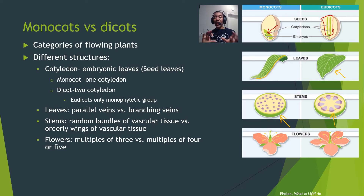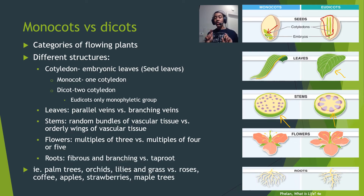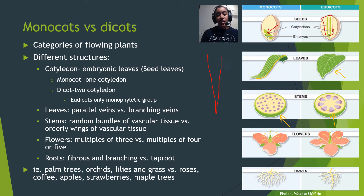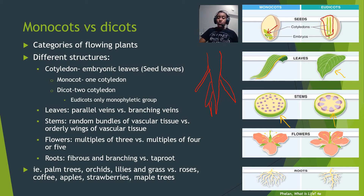In monocots, flowers tend to have multiples of three — three petals, three or six stamens. In dicots, they're generally multiples of four or five. Looking at roots, monocots generally have fibrous roots that branch out from the base of the stem. Dicots have a tap root — a main central root that digs deeper into the soil, with smaller roots branching off from it.